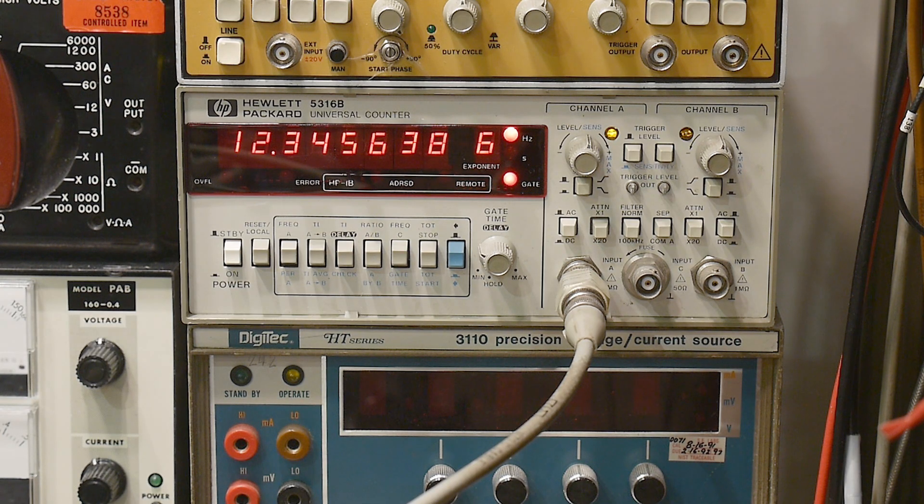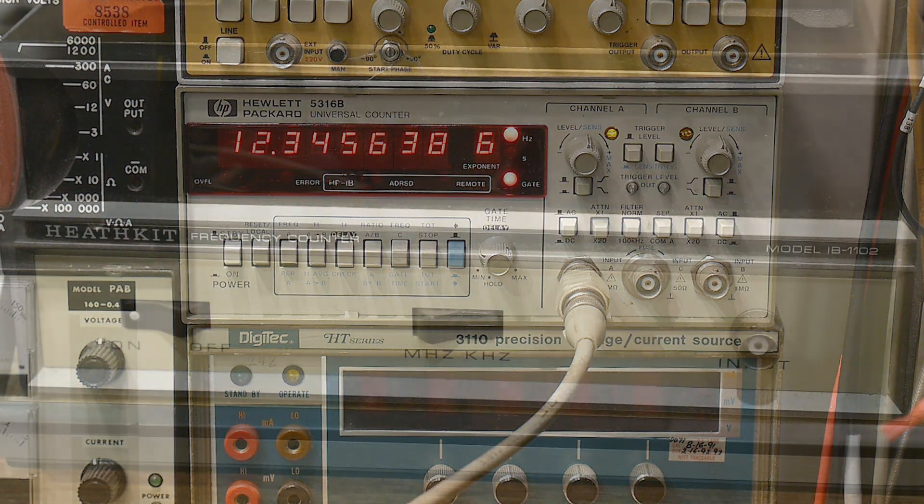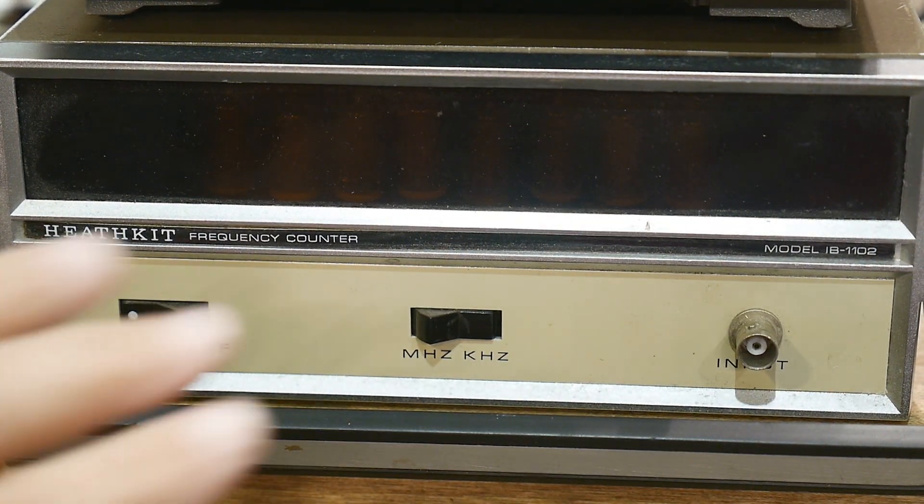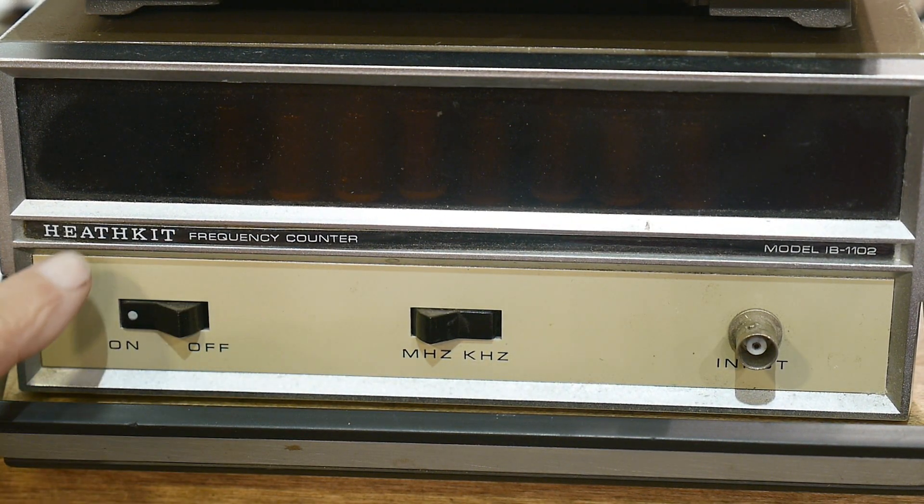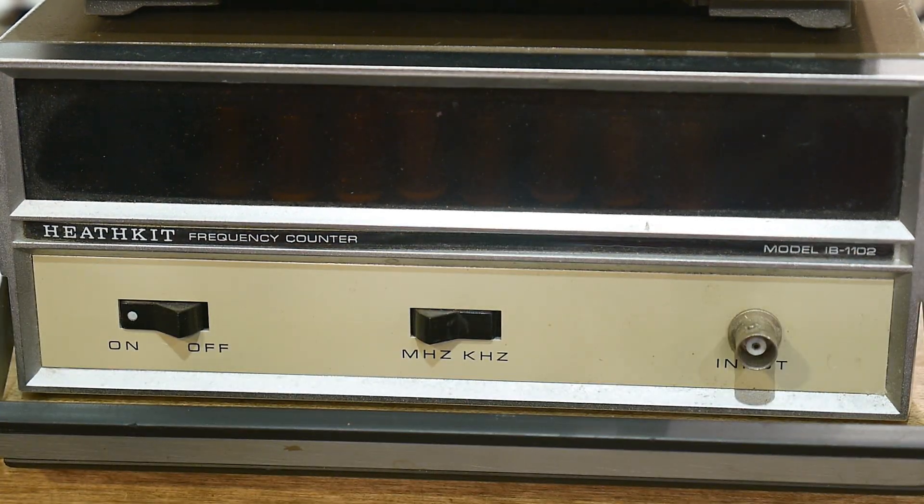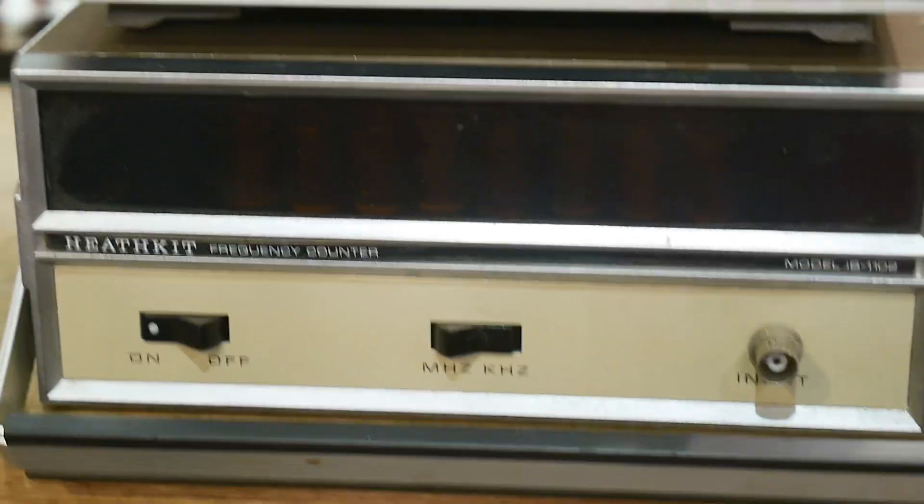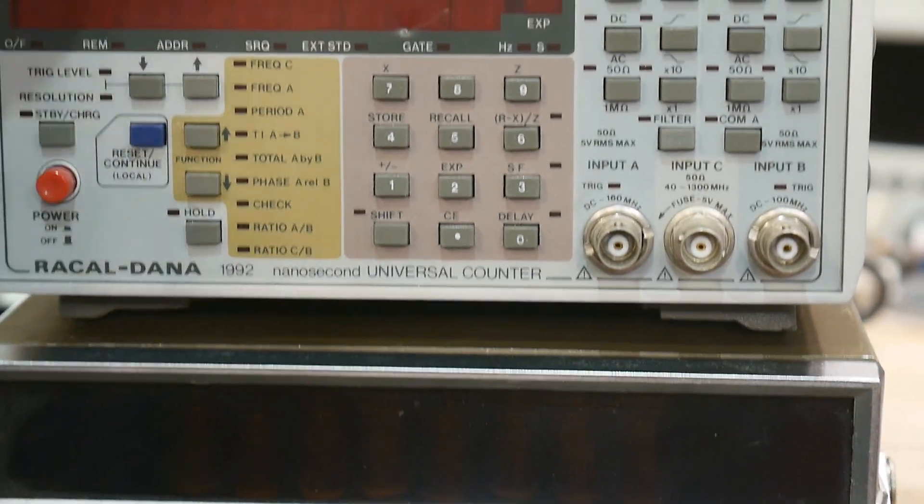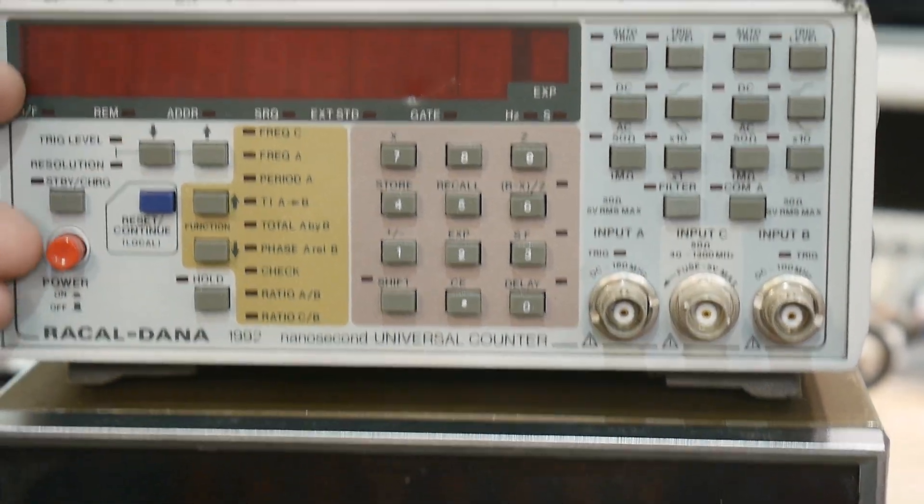But I have since gone a little farther down the rabbit hole, so let me show you that. Recently I rebuilt this counter, a Heathkit IB1102, and people may remember the Racal-Dana that I repaired.